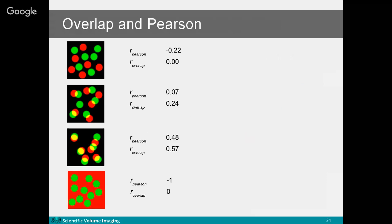Let me compare overlap and Pearson coefficients using examples. When none of the red dots overlap with green dots, the overlap coefficient is zero — quite intuitive, meaning no pixels in two channels overlap. However, the Pearson coefficient gives a negative result, which is less intuitive. The zero background is taken into account when calculating Pearson, so the coefficient is not exactly minus one; it's approximately minus 0.22, making it more challenging to interpret in this case.